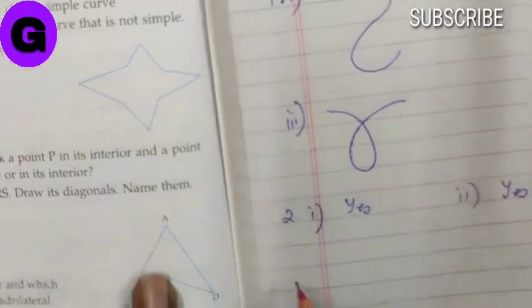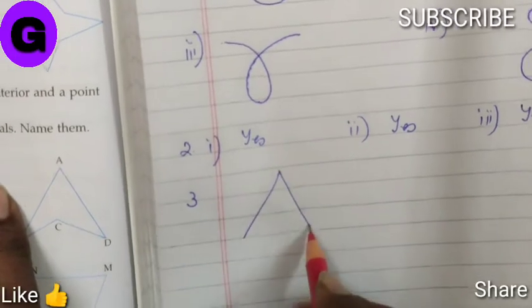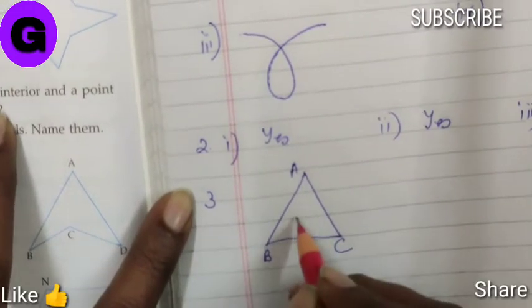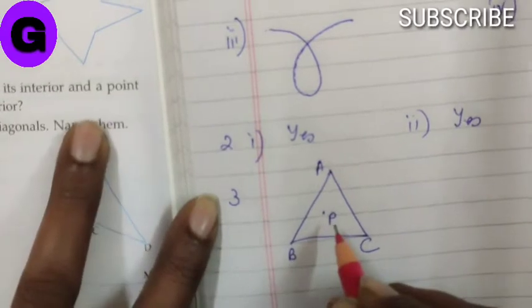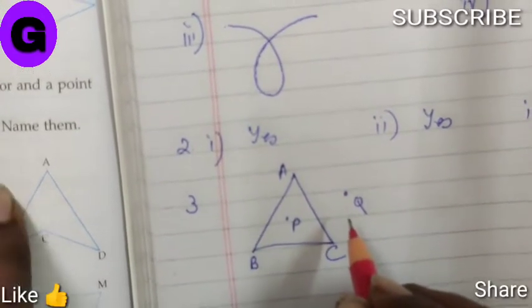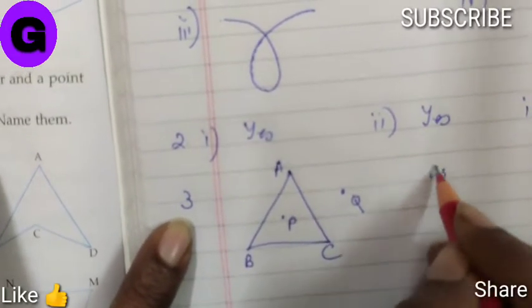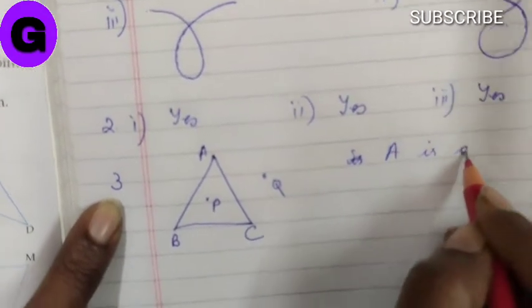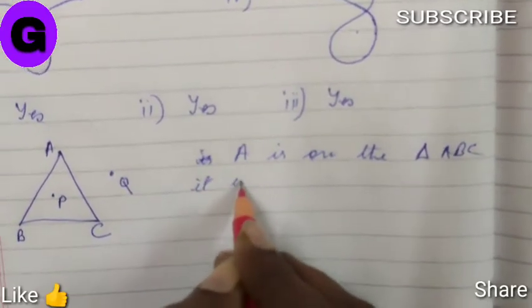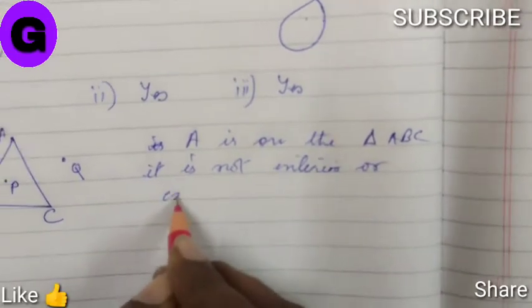Now sum number 3, we have to draw a rough sketch of a triangle A, B and C and mark a point P in its interior. Let us mark P here and a point Q at its exterior. Is the point A in its exterior or in its interior? Point A is on the triangle A, B, C. It is not interior or exterior.